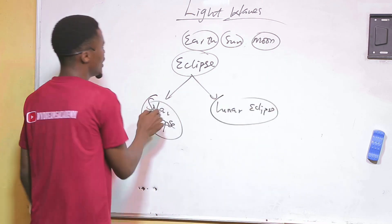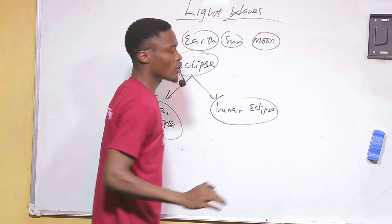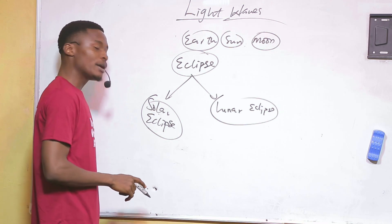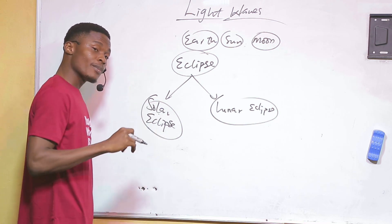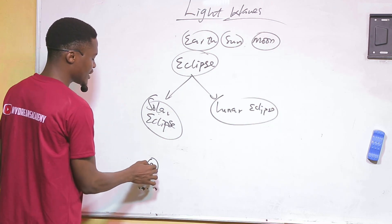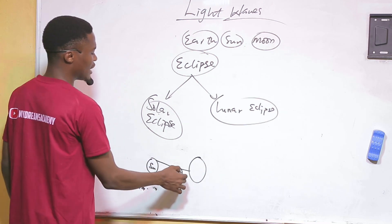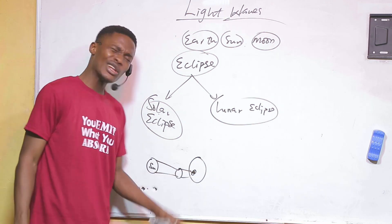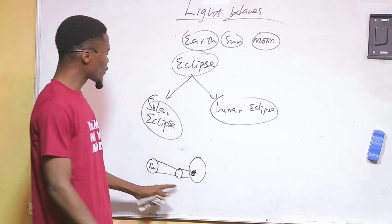A solar eclipse occurs when the moon is between the sun and the earth. The shadow of the moon is cast on the earth's surface. That is what we call a solar eclipse.